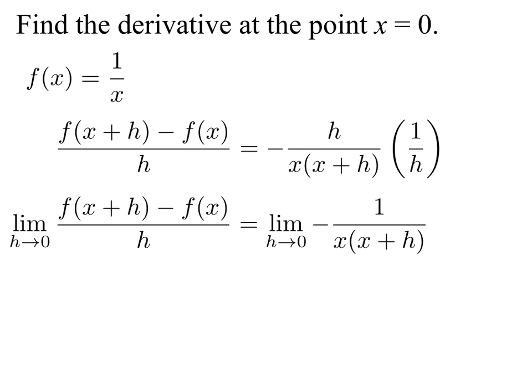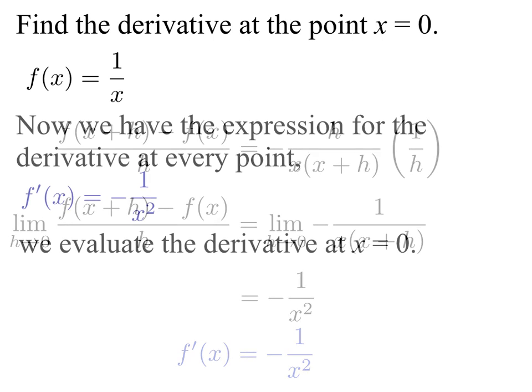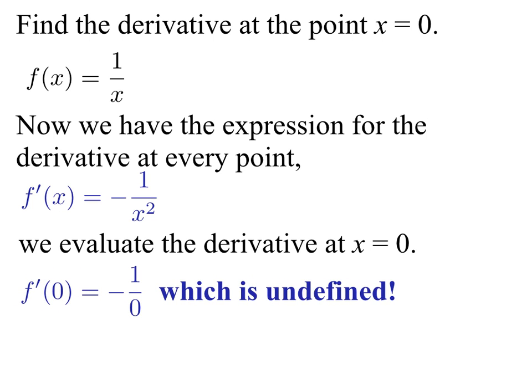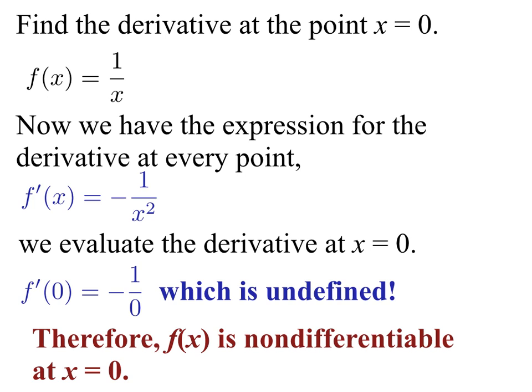We're ready to take the limit of the difference quotient. We have the limit as h goes to zero of -1 / [x(x+h)]. Sending h to zero gives us -1/x². So the derivative of f(x) = 1/x is f'(x) = -1/x². But the problem asked us to find the derivative at x = 0. When we plug x = 0 into the derivative we get a zero in the denominator, which is not allowed. Therefore this function does not have a derivative at x = 0 — f'(0) is undefined, so x = 0 is a point of non-differentiability for 1/x.